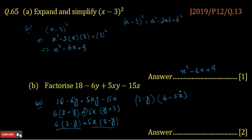So two terms in the factor form, in the multiplication form, and it is the factor of the given expression. The answer is 3 minus y and 6 minus 5x.